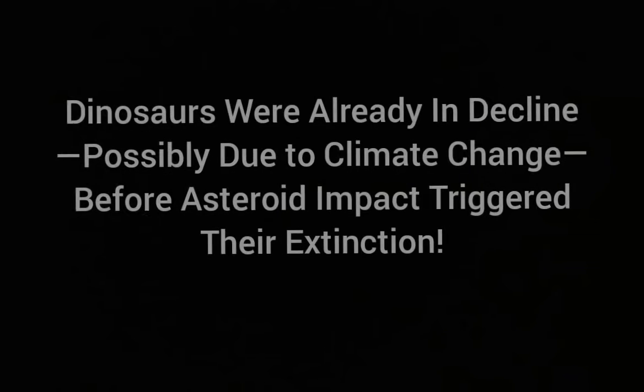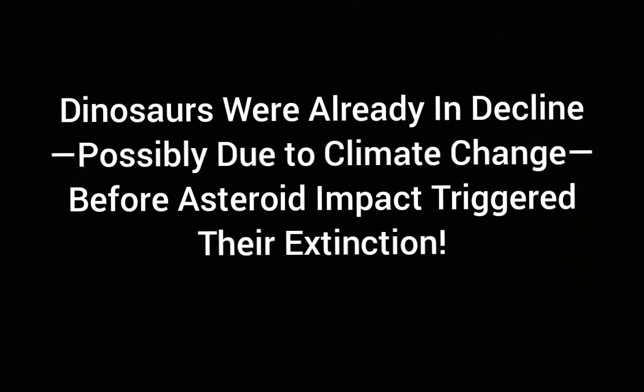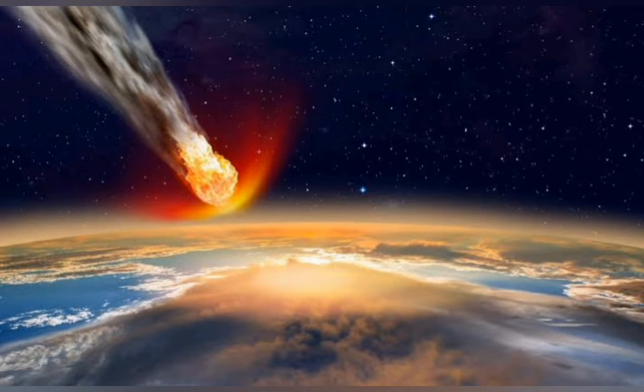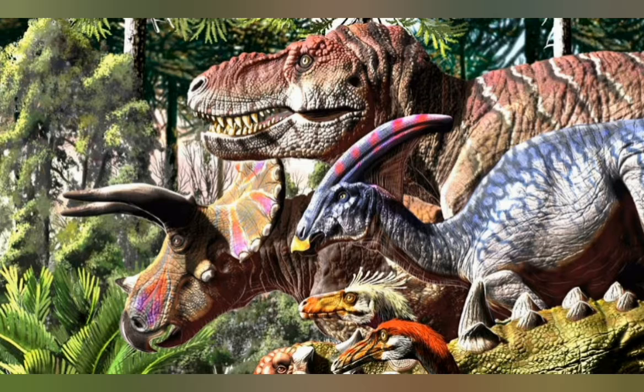Dinosaurs were already in decline, possibly due to climate change, before asteroid impact triggered their extinction. About 66 million years ago, an asteroid came crashing from the sky and completely altered the state of the Earth, with one of its biggest impacts being the fifth mass extinction. Dinosaurs were all thought to be nearly wiped out in one go.